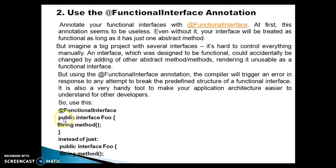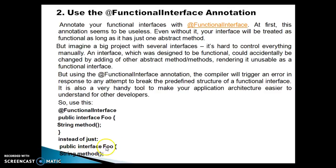So here in this slide, if you have an interface Foo which contains one abstract method, annotate this interface with @FunctionalInterface. This is a clear indication for other developers that this is a functional interface, and if any developer tries to add one more abstract method, the compiler will immediately flag an error message. The first approach — using the annotation — is the preferred one over leaving it without the annotation.